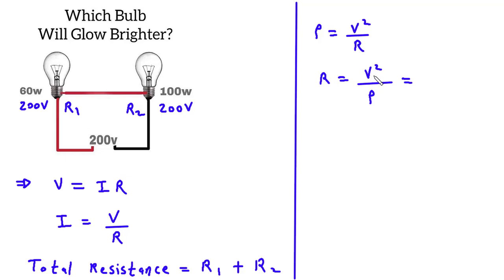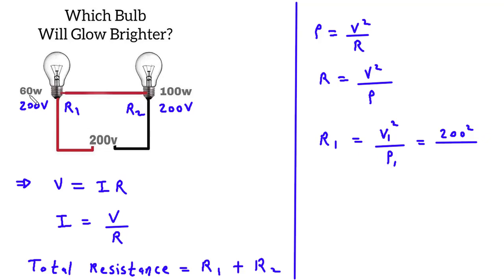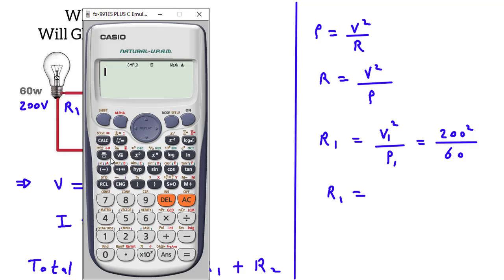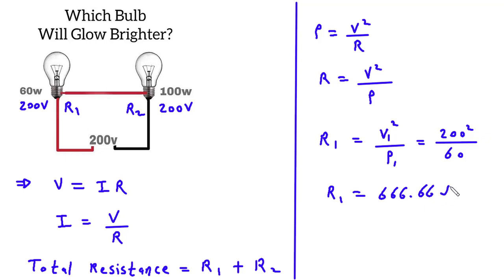The value of V here is 200. First we will find R1, so R1 is equal to V1 squared upon P1. V1 here is 200, so it is 200 squared divided by power value 60. Calculating this gives us 666.66 Ohm.